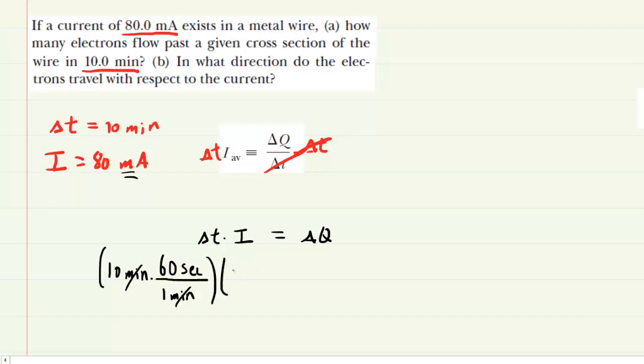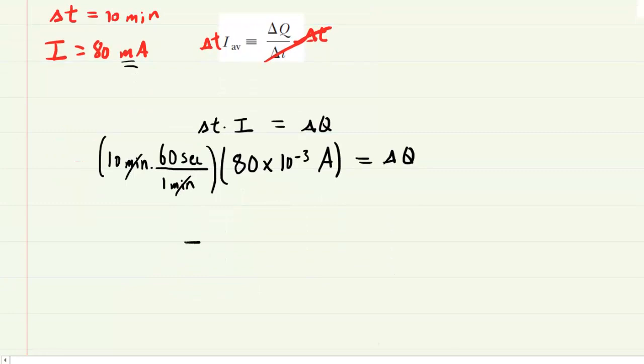And then we'll multiply this by the current. The current was given in milliamps. We want it in amps. So you take the 80 milliamps and you multiply the 80 by 10 to the negative 3, and that converts it into amps. So now we'll pick up our calculators here and multiply all these quantities. And we get an amount of charge equal to 48. So delta Q is equal to 48.